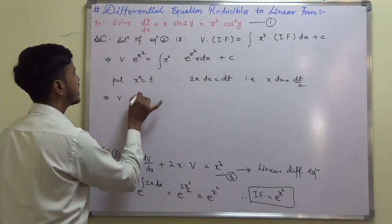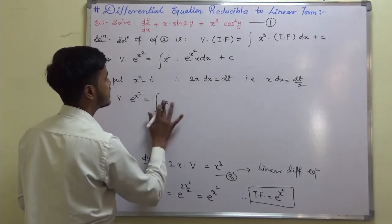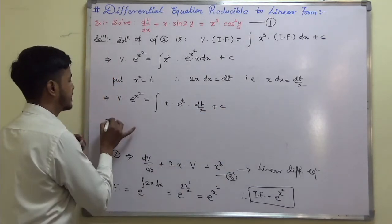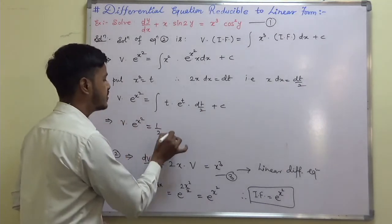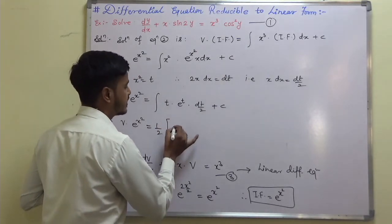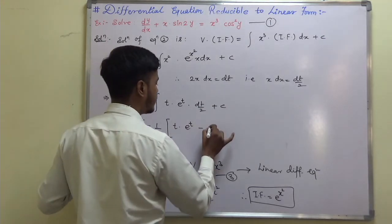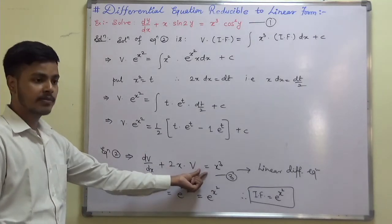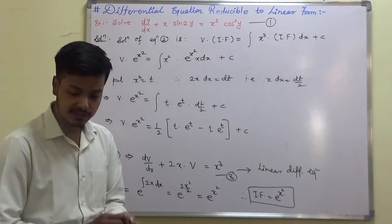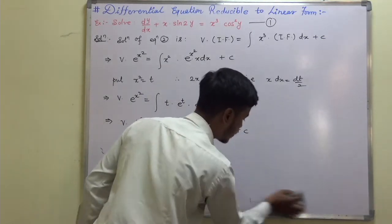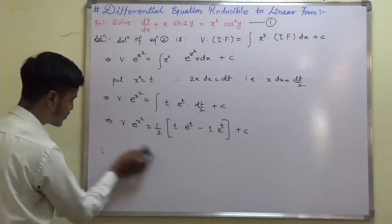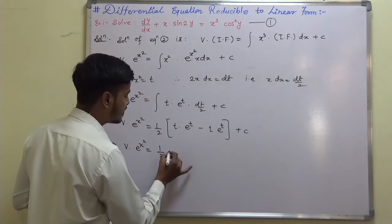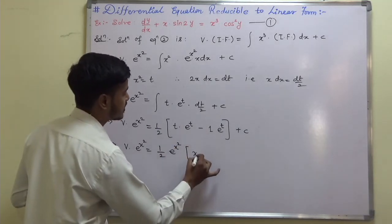Substituting, v·e^(x²) equals the integration of t·e^t·(dt/2) plus C. Using integration by parts, the integral of t·e^t is e^t·(t minus 1). So v·e^(x²) equals (1/2)·e^t·(t minus 1) plus C. Substituting back t equals x²: v·e^(x²) equals (1/2)·e^(x²)·(x² minus 1) plus C.